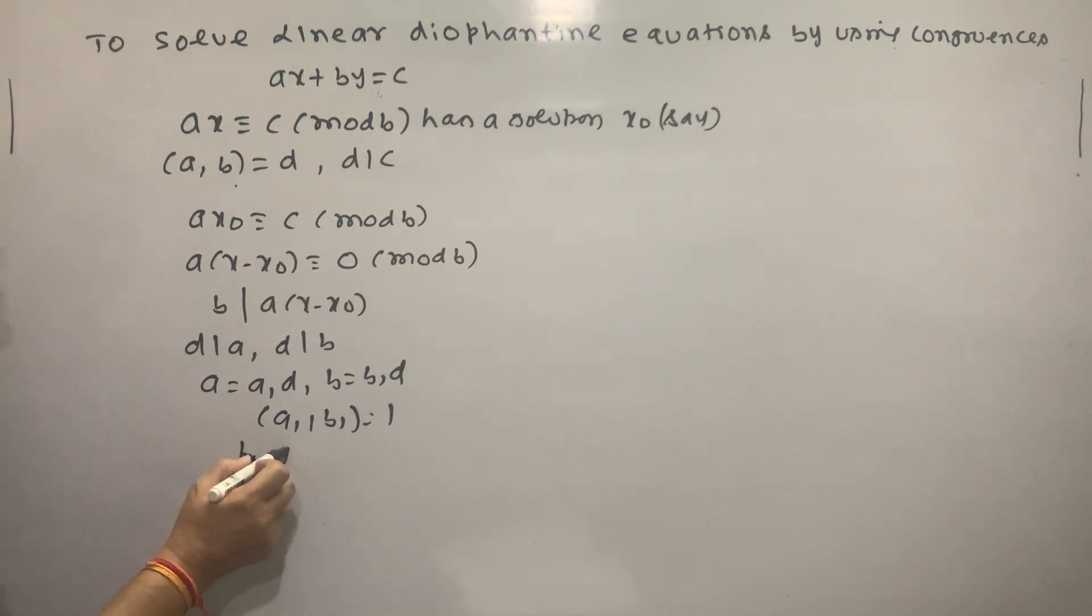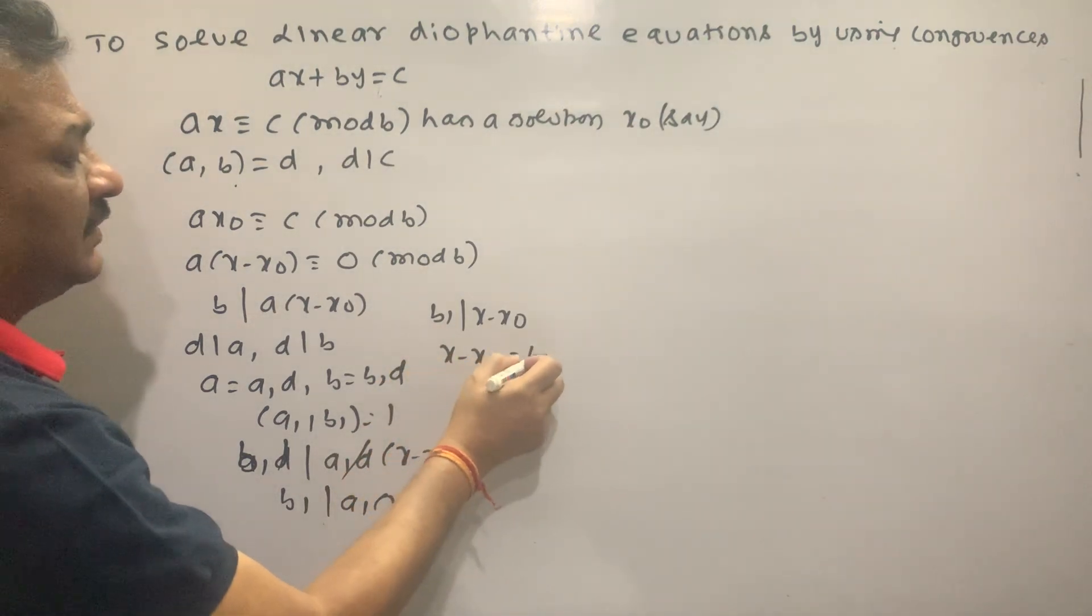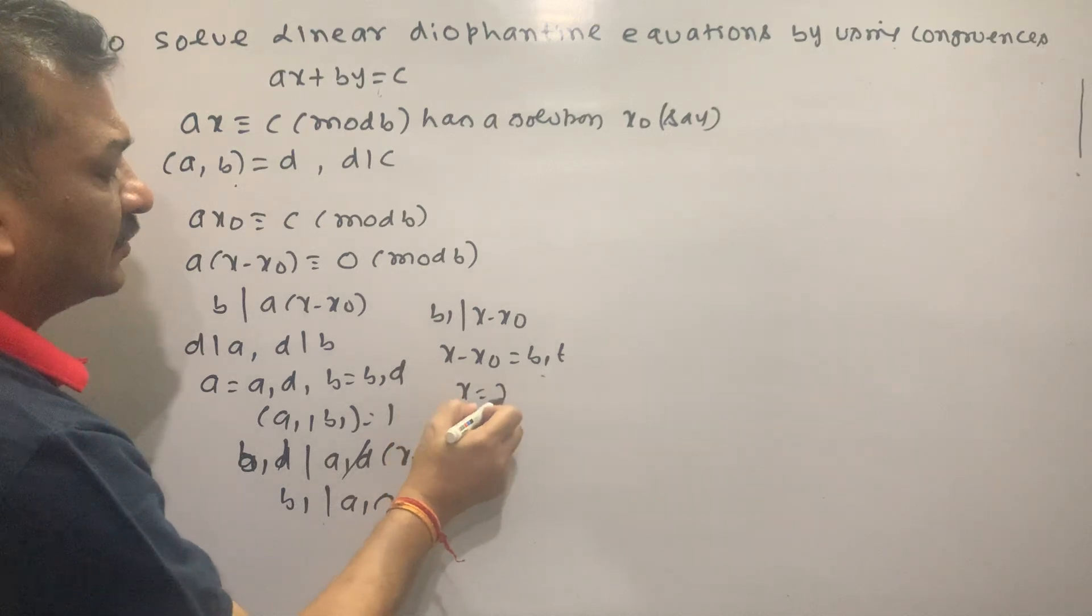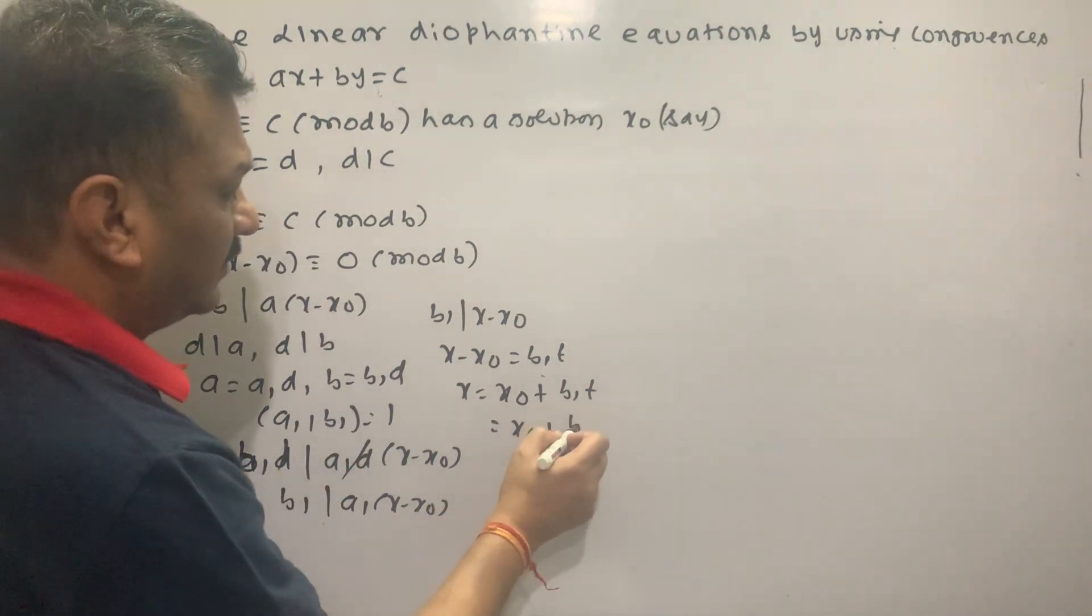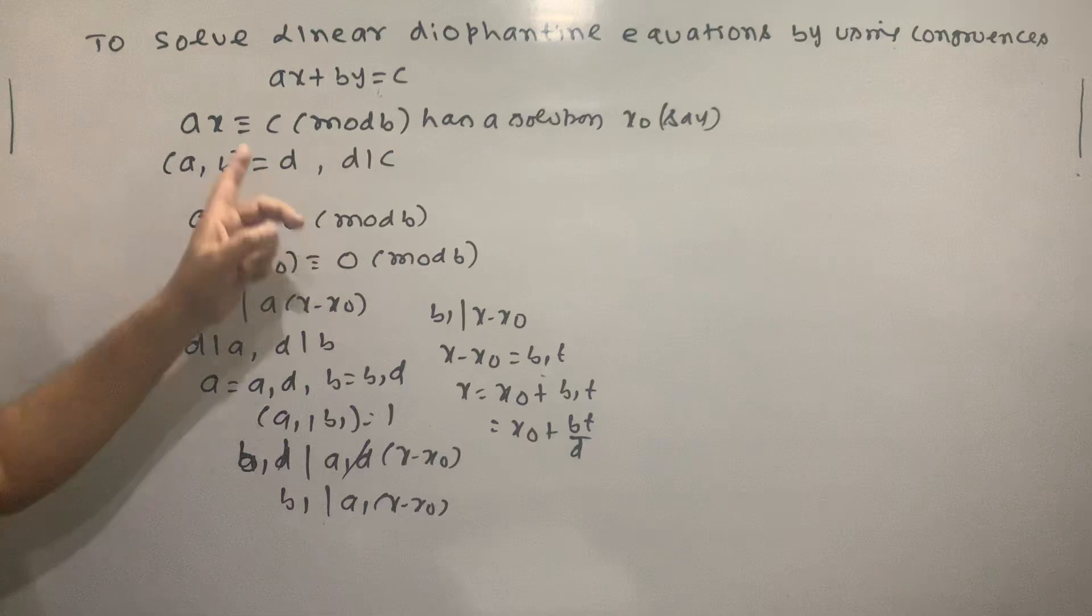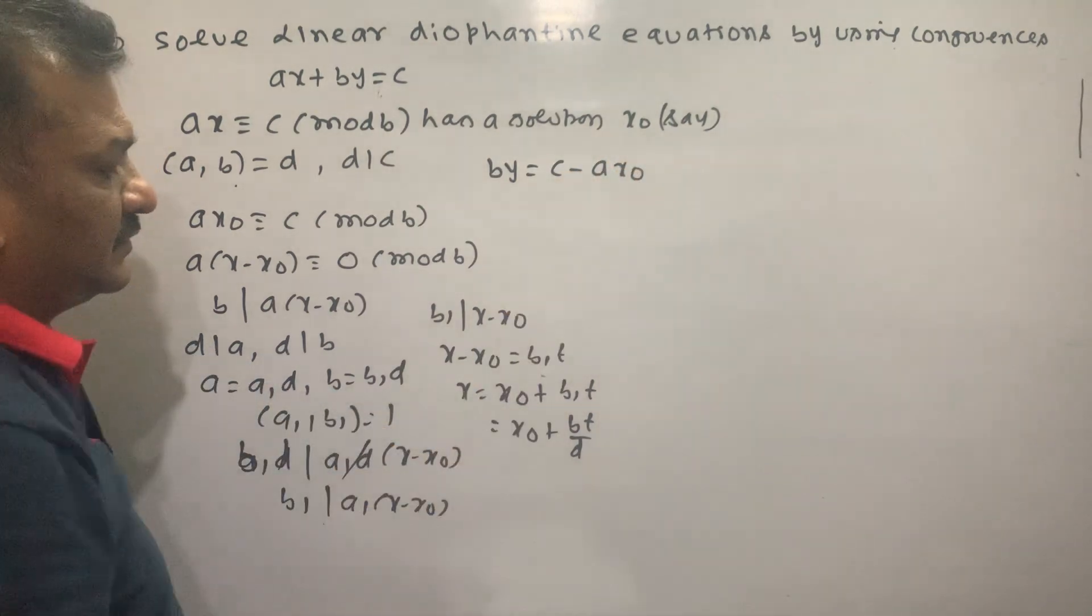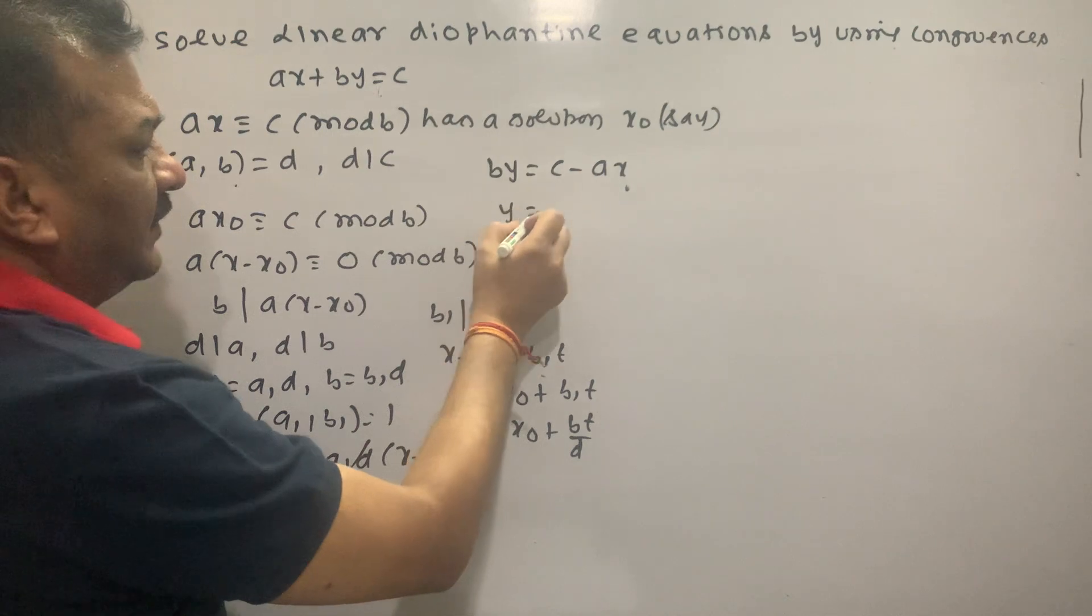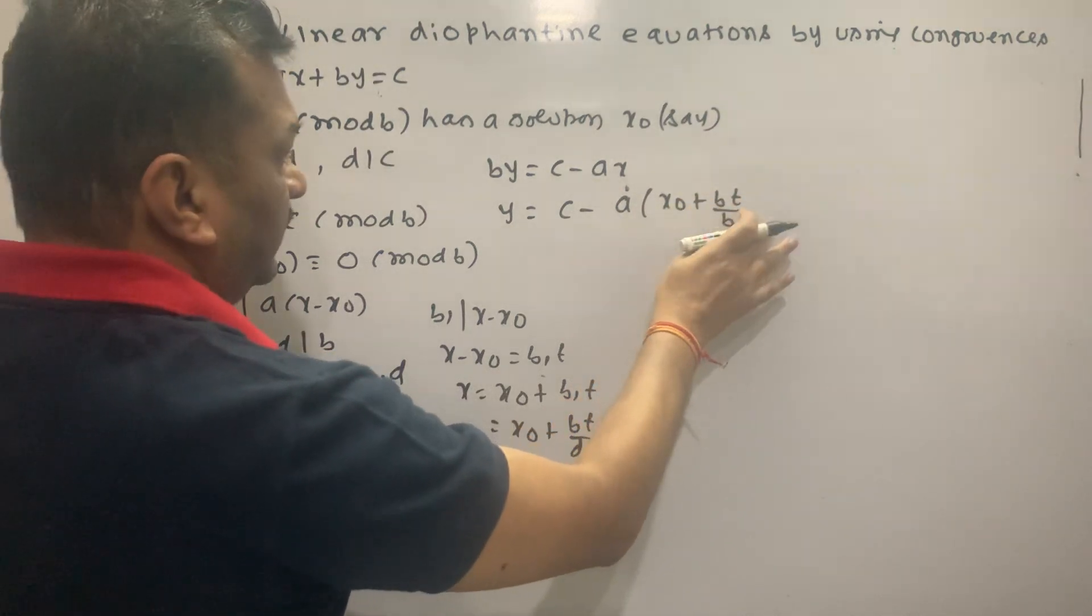A1, B1. D divides A1 times D times (X minus X naught). B1 and A1 have greatest common divisor 1, so B1 divides X minus X naught. X minus X naught equals B1 times T. Then X equal to X naught plus B1 times T.